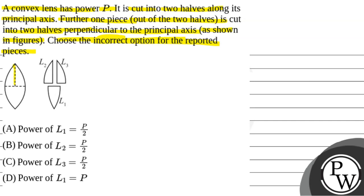So we have a convex lens. It is cut horizontally — half and half. Then the upper part is cut in the vertical direction. So we have three pieces. According to the question, we need to choose which option is incorrect.